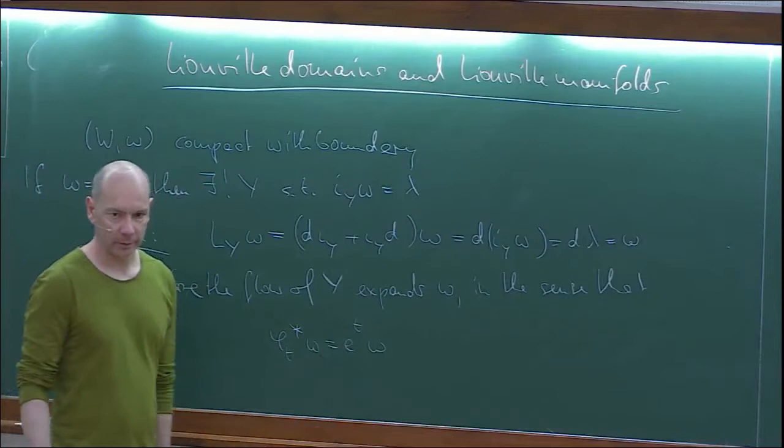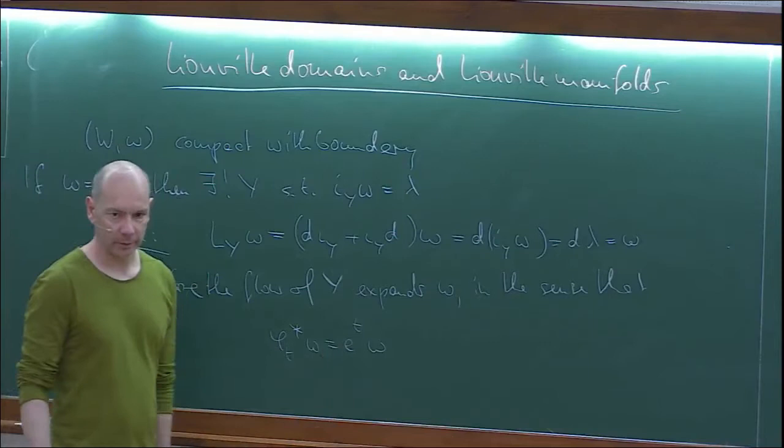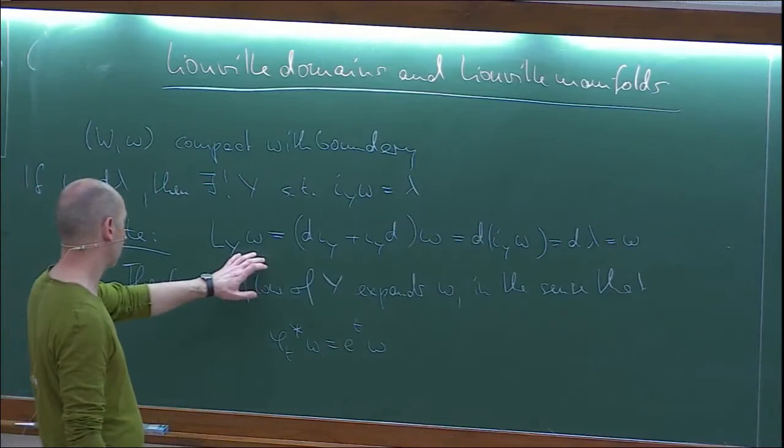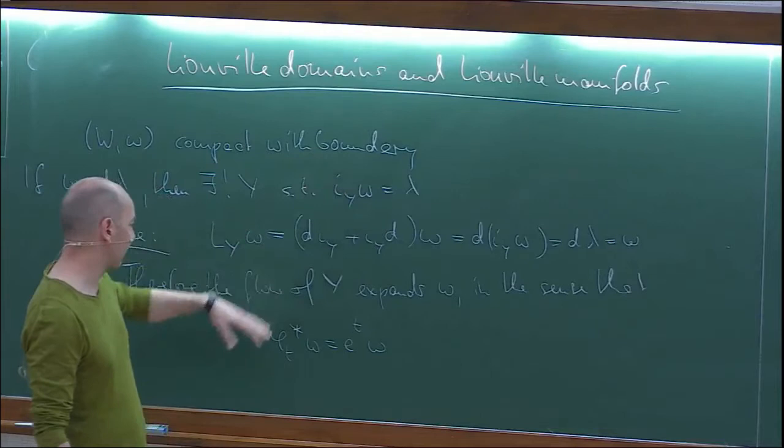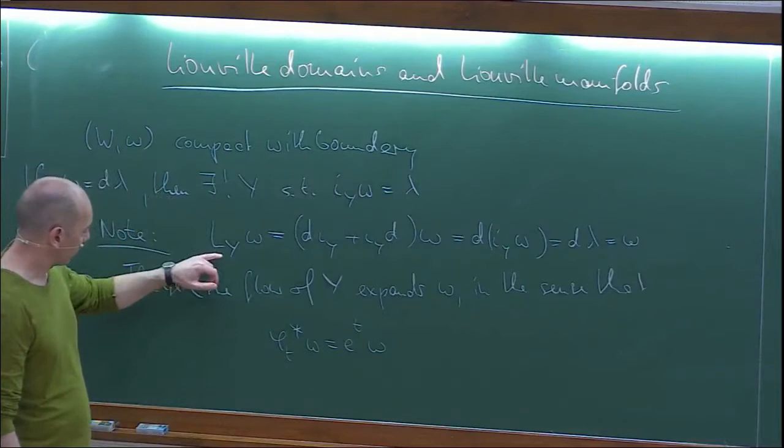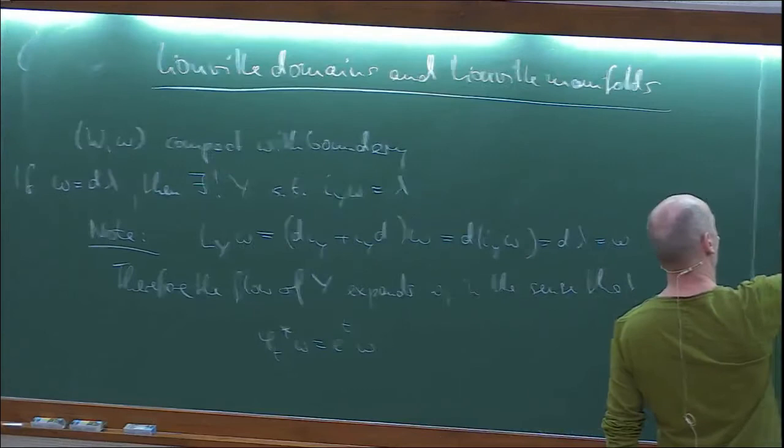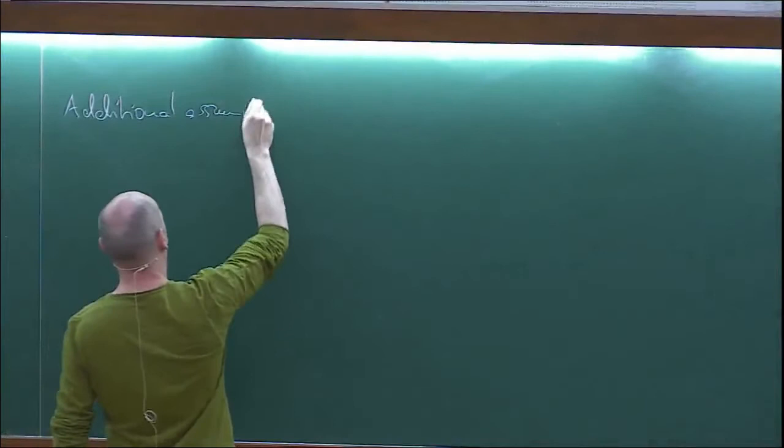As time gets bigger, this gets rescaled by a large constant. Now I said I have a compact manifold with boundary, so if I have a boundary, my flow will not be defined for all time because I might run into the boundary. But I can make an additional assumption: that this vector field Y is transverse to the boundary.